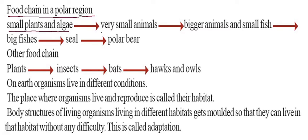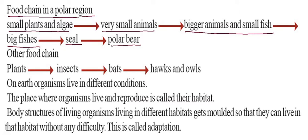Small plants and algae are eaten by very small animals. Very small animals are eaten by bigger animals and small fishes. Bigger animals and small fishes are eaten by big fishes. Big fishes are eaten by the seal, and the seal is eaten by the polar bear. Also, plants are eaten by insects, insects are eaten by bats, and bats are eaten by hawks and owls.